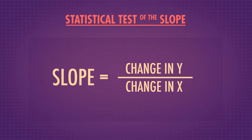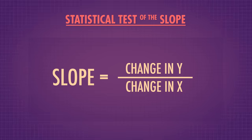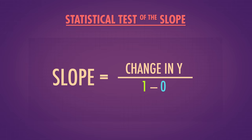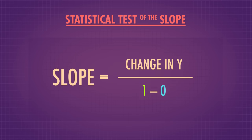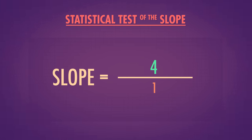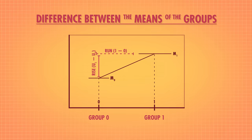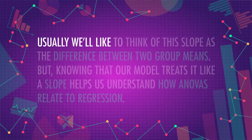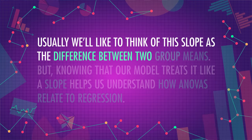In a regression, we did a statistical test of the slope, and that's what the simple ANOVA is doing too. Since rainy days are coded as zero and sunny days as one, the change in the x direction is just one. So the slope of this line is the difference between mean bunny counts on sunny days — five — minus mean bunny counts on rainy days — one. The difference of four is the change in the y direction. We test this difference the same way we tested the regression slope, and the slope tells us the difference between the means of the two groups.